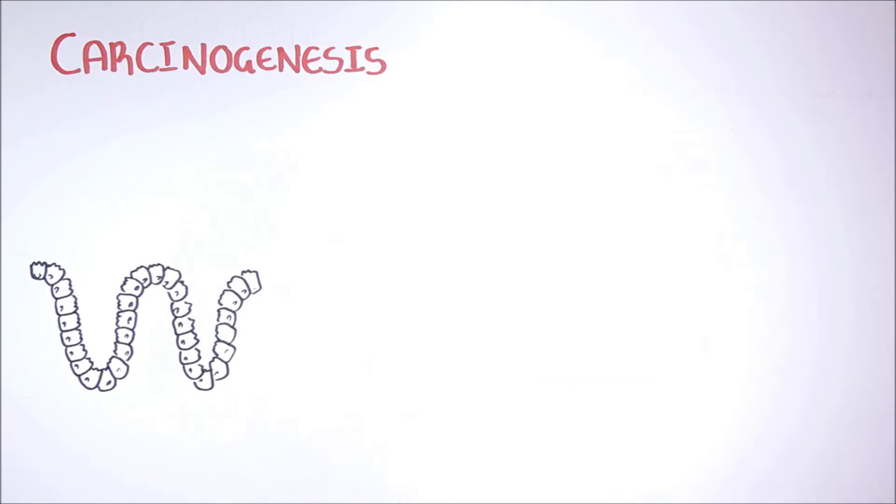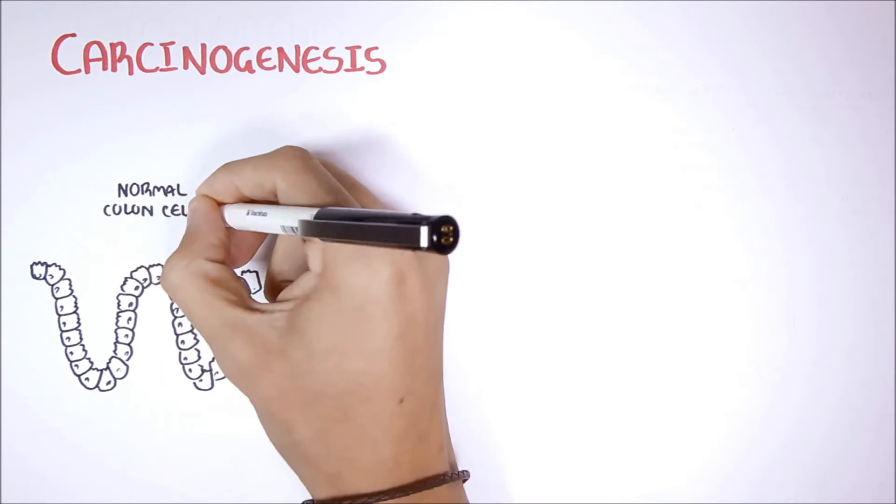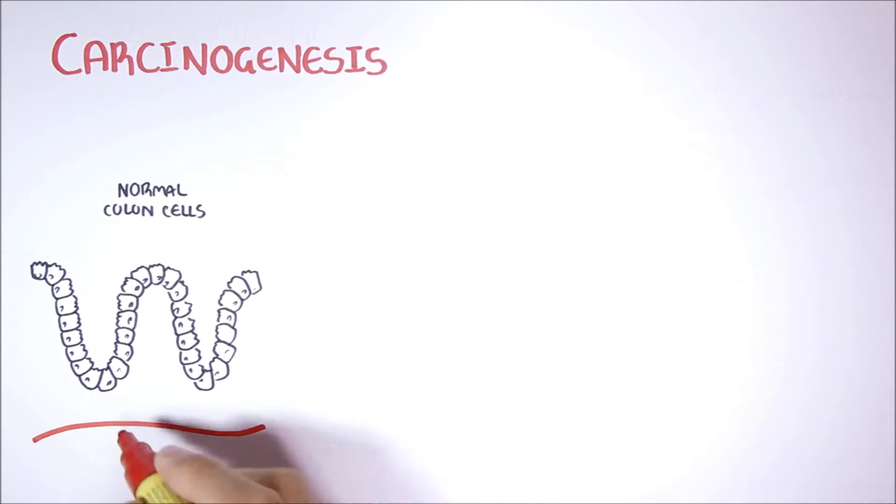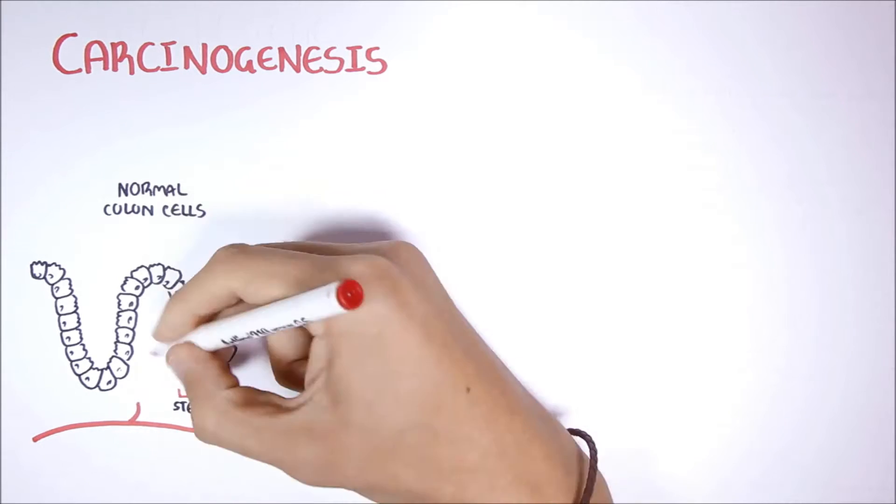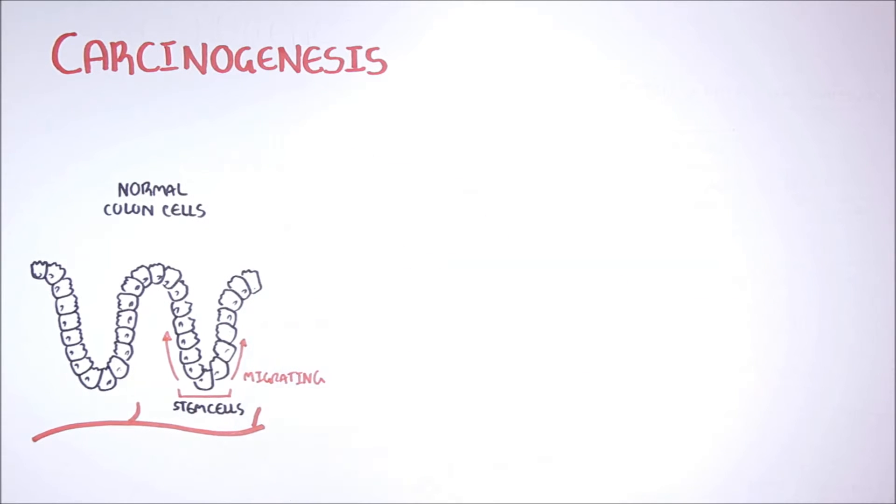So we begin by looking at normal colon cells that have their blood supply. Here, where the crypts are, stem cells will migrate up, giving rise to new colon cells.